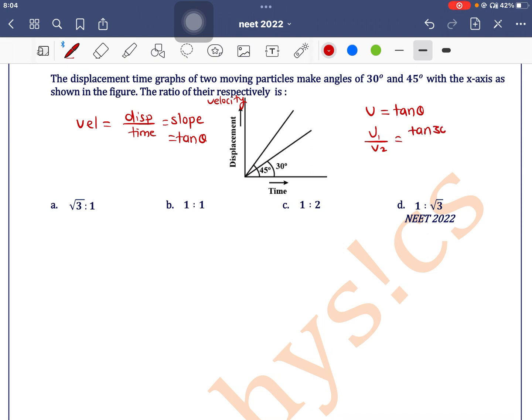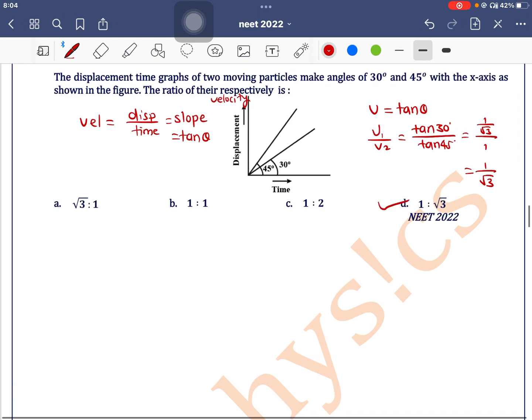30 degrees. For line number 2, tan of 45 degrees. What is tan 30? 1 by root 3. Tan 45? 1. So the answer is 1 by root 3. Option d is the correct one.